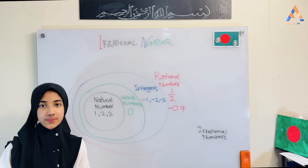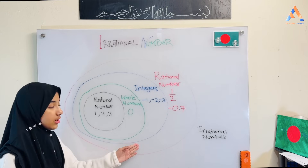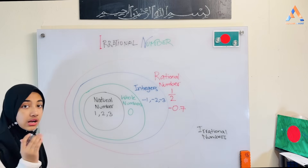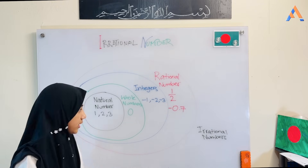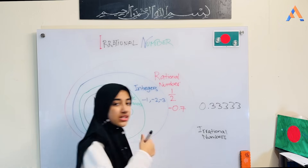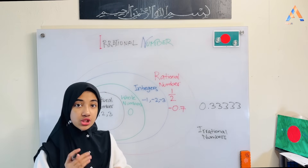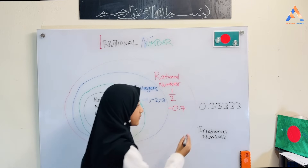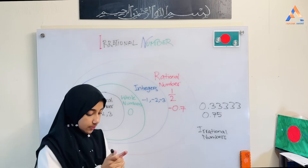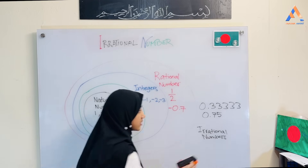A rational number also has a recurring decimal or terminating decimal. Recurring means it keeps repeating — it just goes on repeating. Terminating means it ends. So if a decimal is recurring or terminating, it is a rational number.